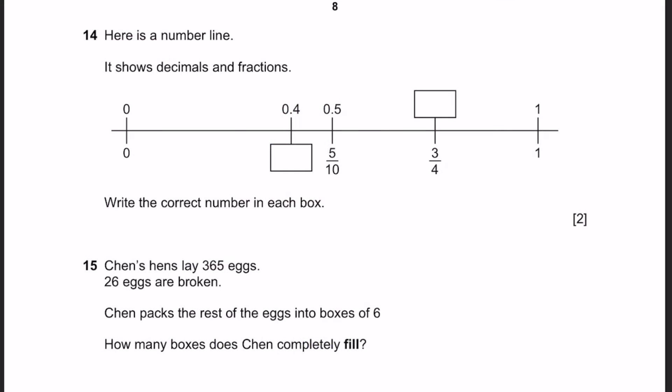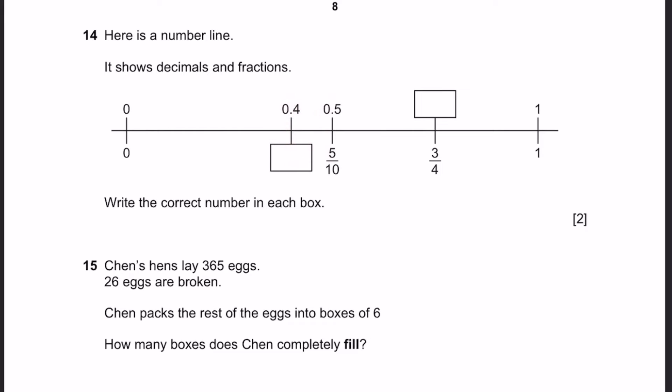Question 14. Here's a number line. It shows decimals and fractions. Write the correct number in each box. So, 0.4 goes to what? It's simply 4 by 10, or in other words, 2 by 5.